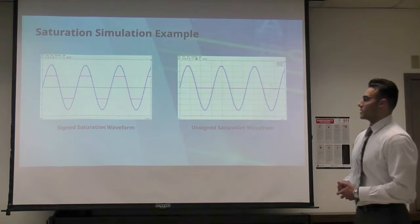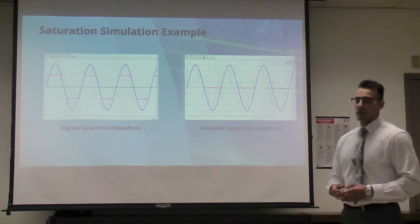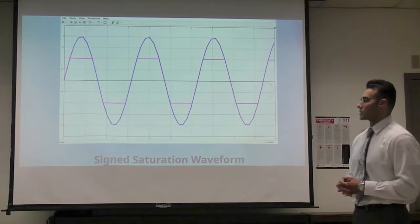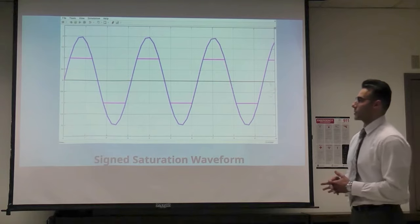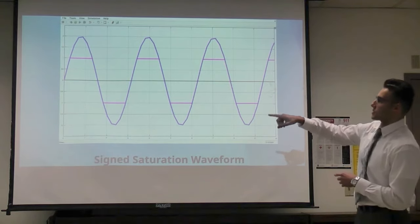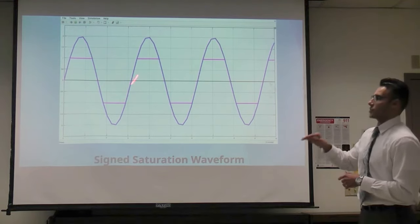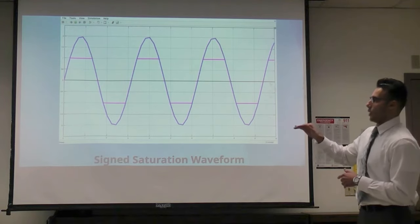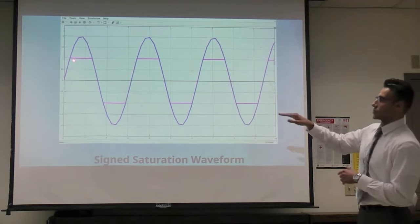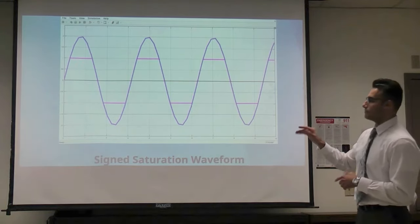This is a signed and unsigned saturation waveform that we simulated in MATLAB to show what our saturation unit does. The processor samples a signal of amplitude two, and we're setting saturation at one. If the signal is above or below that, it will saturate the signal at the maximum level, which is one, and the minimum level, which is negative one.